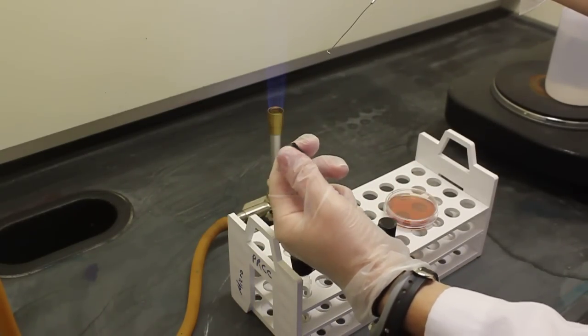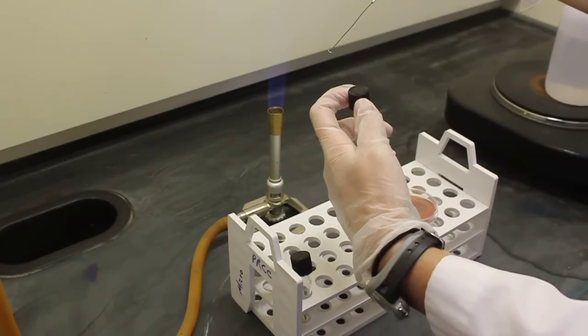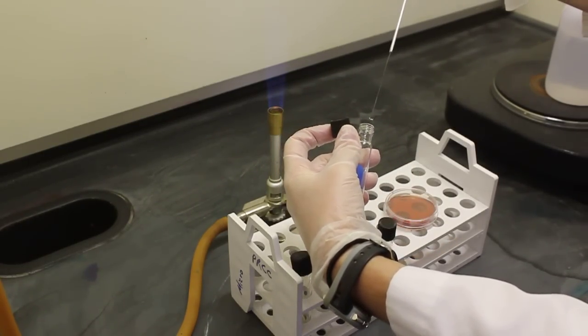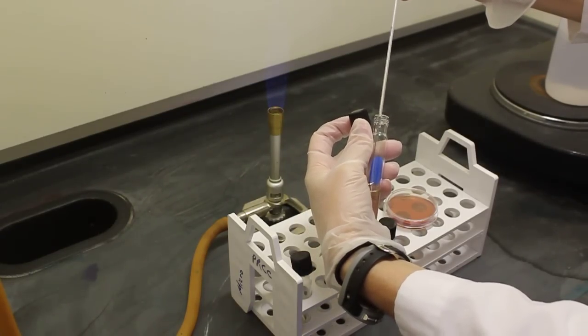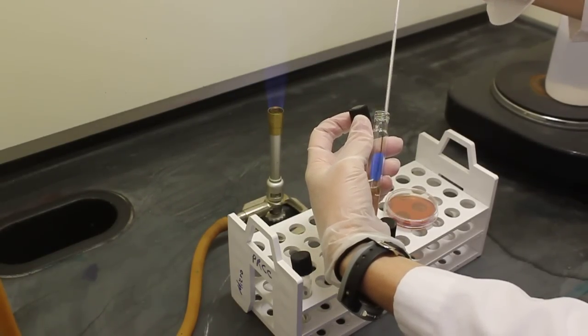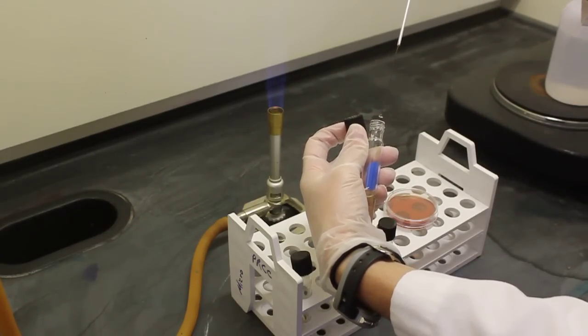I'm going to inoculate my broth. Open the broth carefully not to touch the top. I then dip the bacteria into the broth. You can shake it around a little if you like, even though you cannot see the bacteria coming off. I then pull straight out.